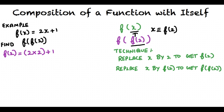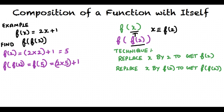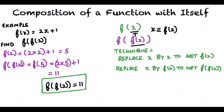Replacing x by 2 in the function, we get f(2) = 2 times 2 plus 1, which equals 5. Next, we substitute the value of f(2), which is 5, for x in the same function to get f(f(2)). Thus, f(f(2)) = 2 times 5 plus 1, which equals 11. The value of f(f(2)) is 11.